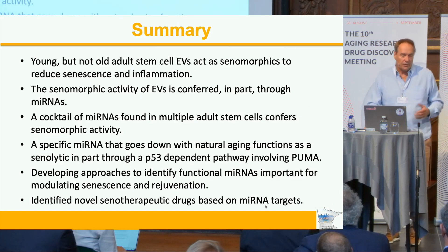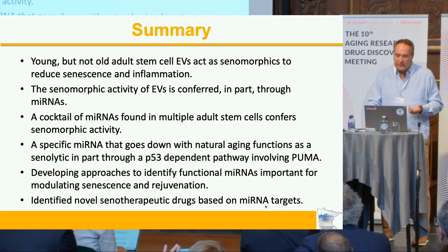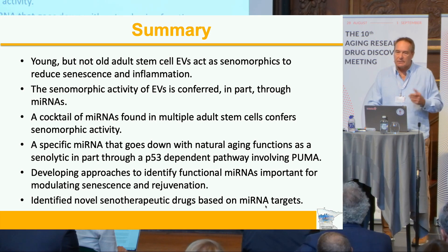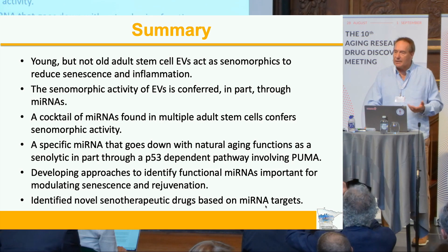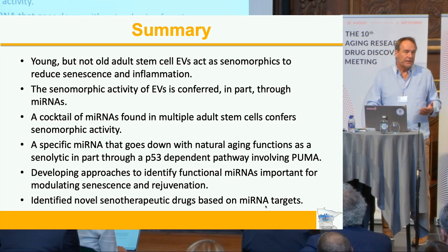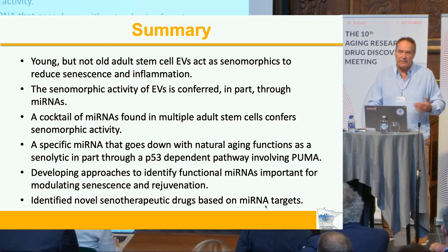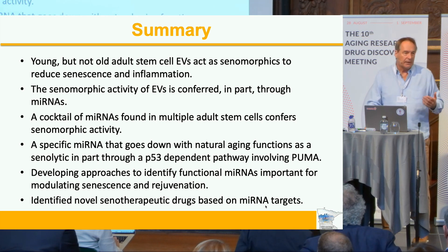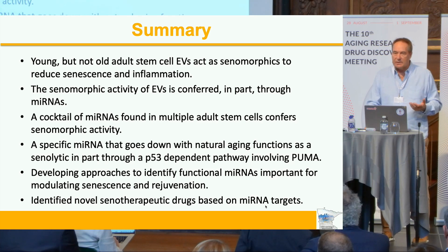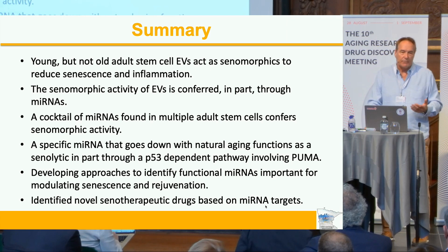To summarize: we've shown that young but not old adult stem cell EVs function as senomorphics. At least part of this activity is through microRNAs, which are small, easily delivered, and very stable. We've identified a cocktail of microRNAs from multiple sources of adult stem cells that function as a senomorphic — probably not optimal, but proof of concept. We've also shown that in circulation, at least of long-lived Ames dwarf mice, there is a microRNA — presumably in vesicles — that functions as a senolytic. We're developing approaches to identify functional microRNAs important for modulating senescence and rejuvenation, and then using this information to identify novel drugs that target the same pathways the microRNAs are targeting.